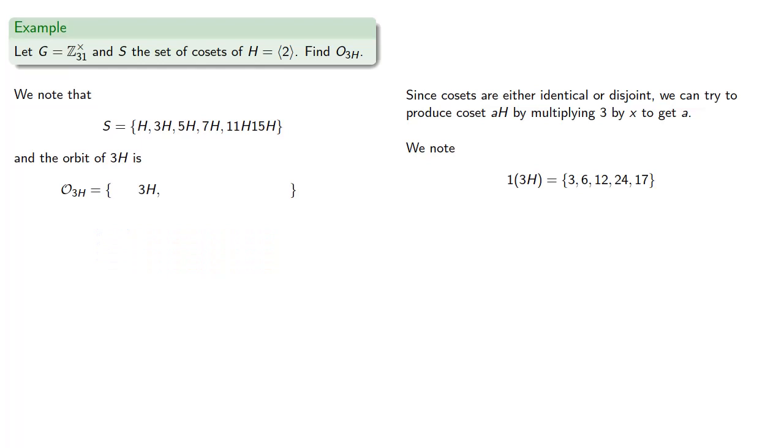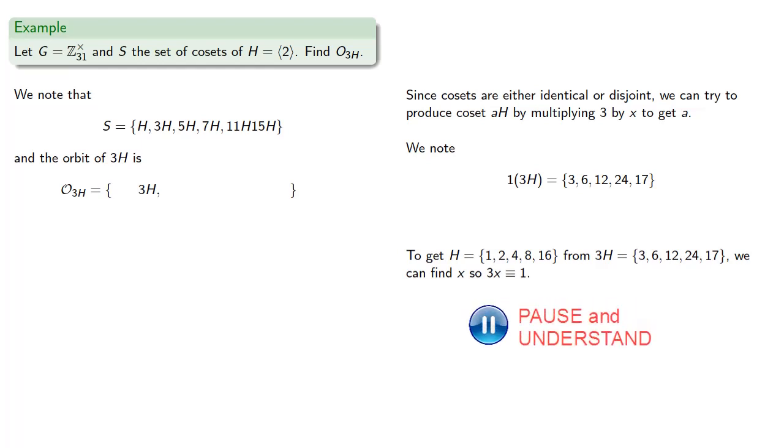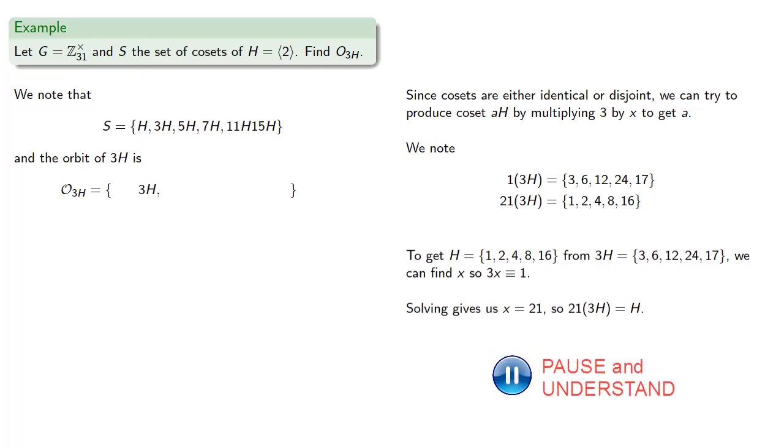To get H from 3H, we want to find X so that when I multiply 3 by X, I get 1. But since we're living in a group, we can solve this, and we find X is 21. And so 21 times 3H is going to be H. And since H is something we can get to if we start at 3H, then H is going to be in the orbit.